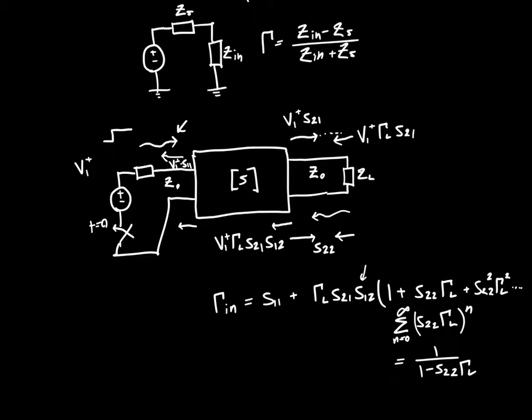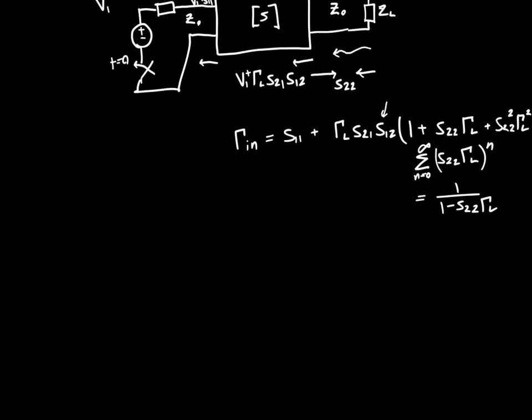And so that's awesome. We're actually done. We're actually finished. So gamma in is just equal to S11 plus gamma L S21 S12 over one minus gamma L times S22.